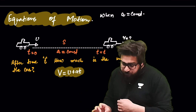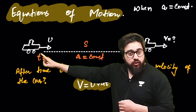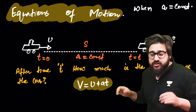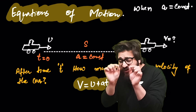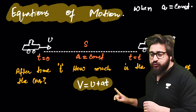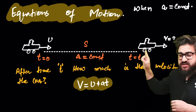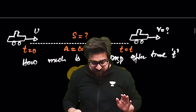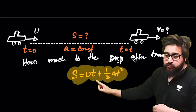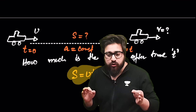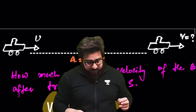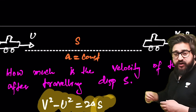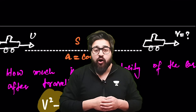Now the equations of motion. If a car starts from a point with initial velocity u and constant acceleration a, after time t its velocity is given by: v = u + at. This equation is used only when acceleration is constant. To find displacement covered, use: s = ut + ½at². This also applies only when acceleration is constant.